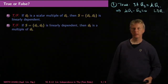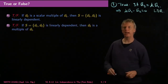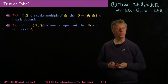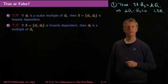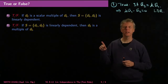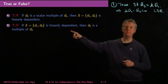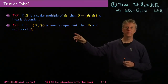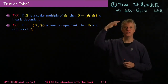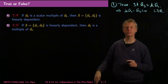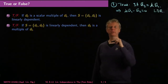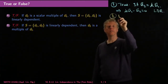True or false #2: if the set {U1, U2} is linearly dependent, then U2 is a multiple of U1. You might think this is true, but you have to be careful. What's true is that if it's linearly dependent then one is a multiple of the other, but you don't necessarily know which one. If both are non-zero you can replace the scalar with its reciprocal, but the trick is that U1 could be zero. So statement two is false.